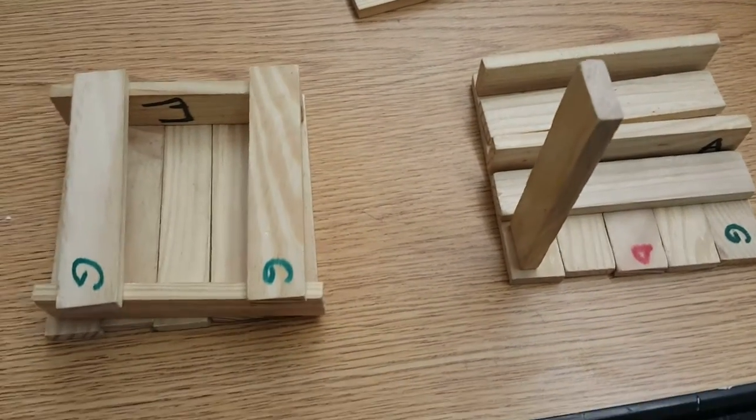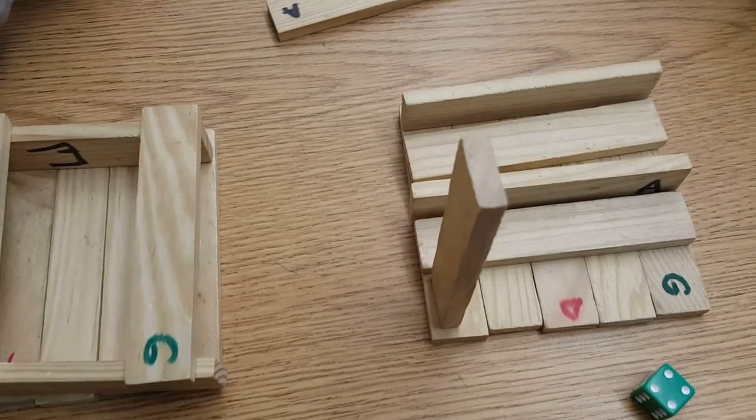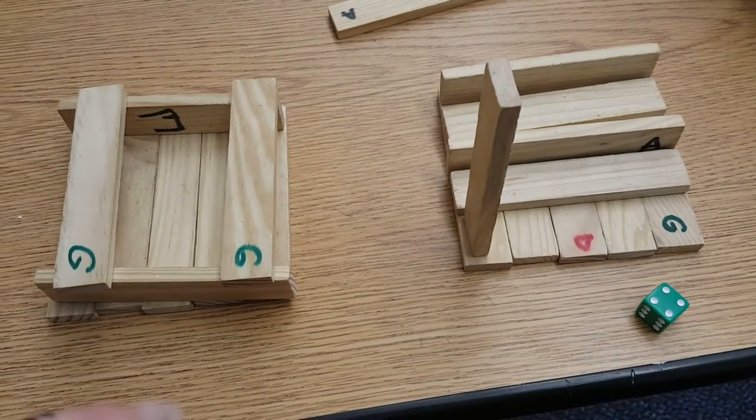So one and two are flat. Three and four are side. Five is tall, and six is choice.